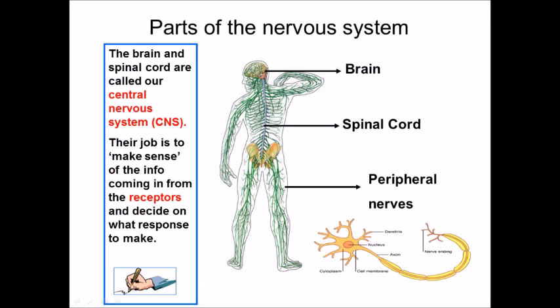The major parts of the nervous system can be divided into two major sections. The central nervous system is the first and the peripheral nervous system is the second. The central nervous system comprises the brain and the spinal cord, and the peripheral nervous system is all of the other nerves which are not the spinal cord or the brain. The brain is effectively a collection of neurons, and along with the spinal cord that comprises your central nervous system.